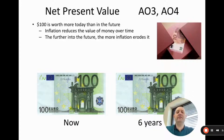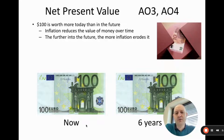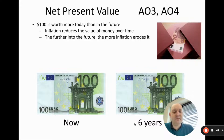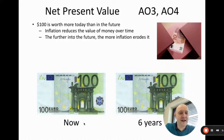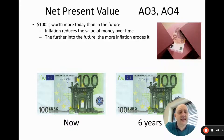NPV is built on the idea that $100 is worth more today than in the future. If I gave you an option — 100 euros now or 100 euros in six years — which would you take? The benefit of taking the money now is you've got 100 euros in your hand, but also in six years 100 euros will be able to buy less, because of inflation. Inflation is the idea that prices go up over time, and hence the value of money goes down over time.